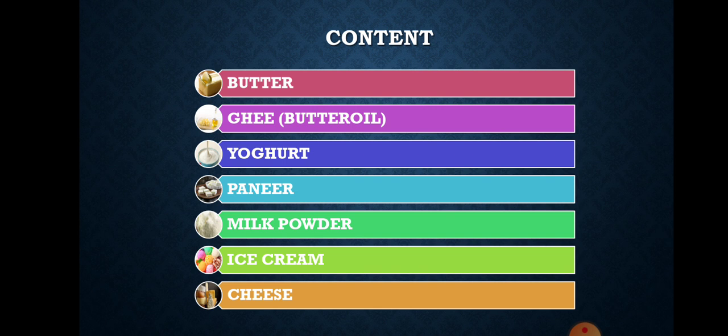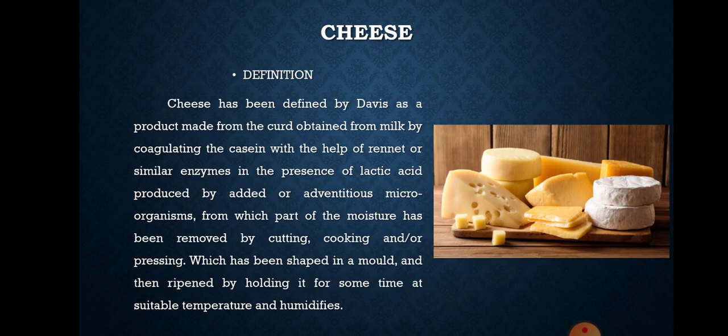Cheese has been defined by Davis as a product made from the curd obtained from milk by coagulating the casein with the help of rennet or similar enzymes in the presence of lactic acid produced by added or adventurous microorganisms, from which part of the moisture has been removed by cutting, cooking, and/or pressing.